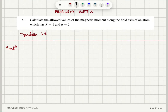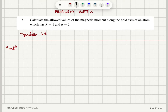Calculate the allowed values of the magnetic moment along the field axis of an atom which has j equal to 1 and g equal to 2. J is our total angular momentum quantum number and there is a corresponding magnetic quantum number m sub j, which varies from minus j to j as integers. We can calculate the magnetic moment along the field axis using m equals minus g times the Bohr magneton times m sub j.